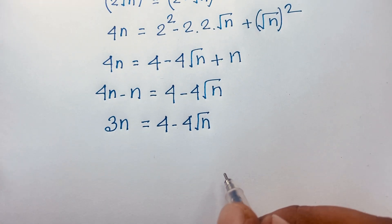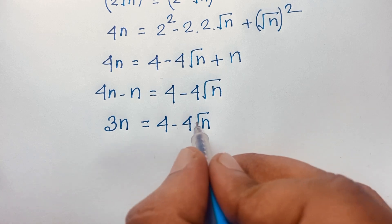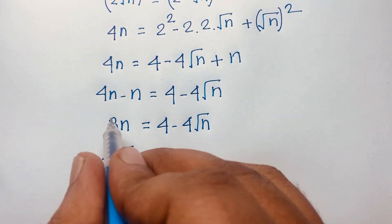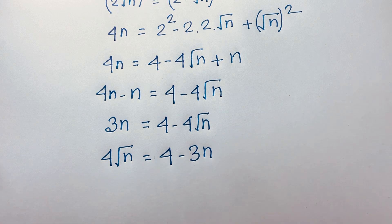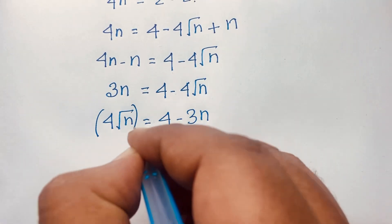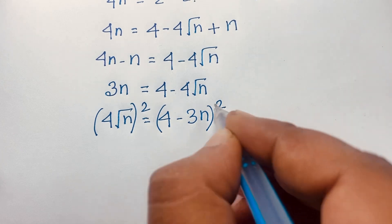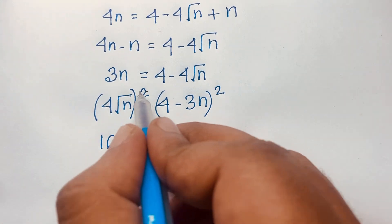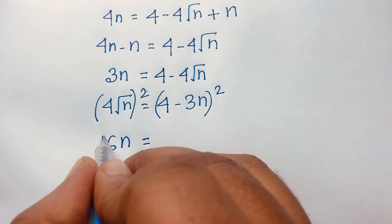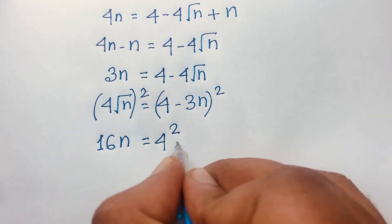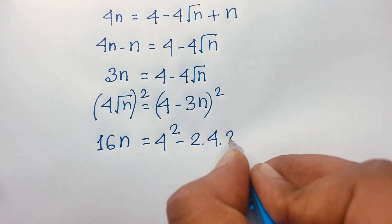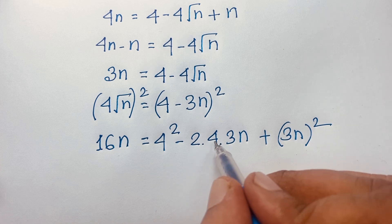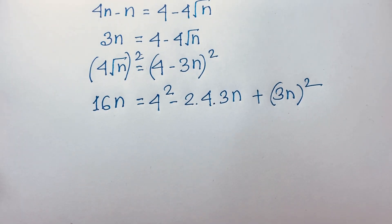Now we move the negative term so that 4√n = 4 - 3n. We square both sides again to eliminate the square root: (4√n)² = (4 - 3n)². The left side gives 16n. Expanding the right side using (a - b)² = a² - 2ab + b².